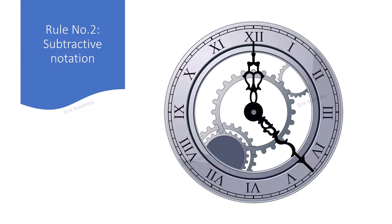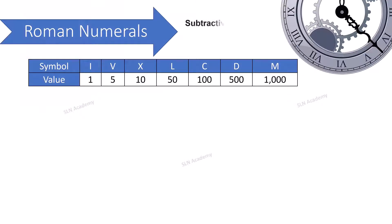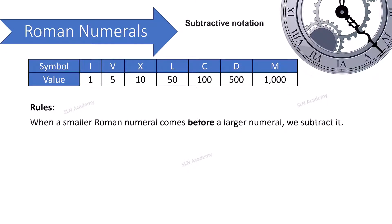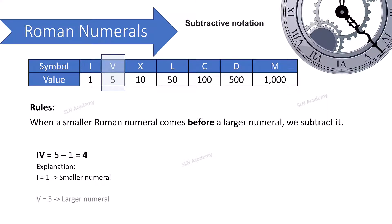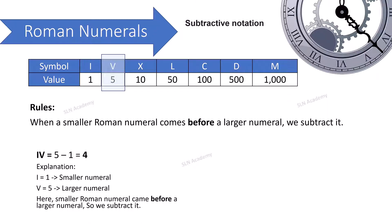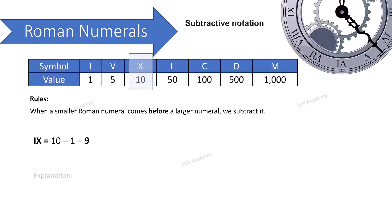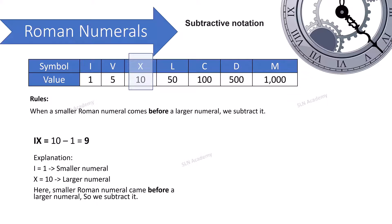Rule number two: Subtractive Notations of Roman Numerals. When a smaller Roman numeral comes before a larger numeral, we subtract it. For example: IV — I = 1 (smaller), V = 5 (larger); smaller numeral came before a larger numeral, so we subtract: IV = 4. IX — I = 1 (smaller), X = 10 (larger); smaller numeral came before a larger numeral, so we subtract: IX = 9.